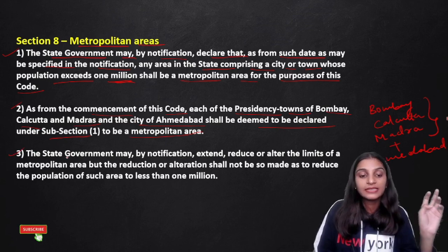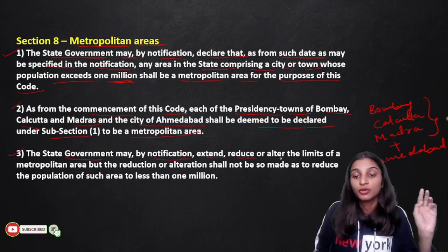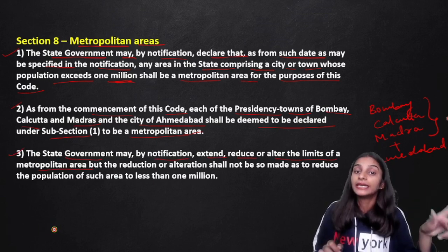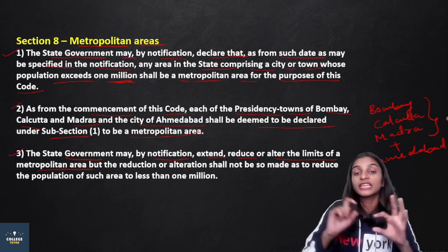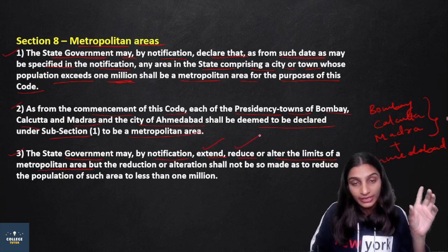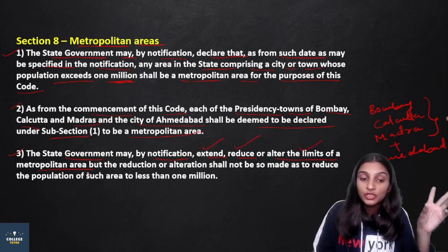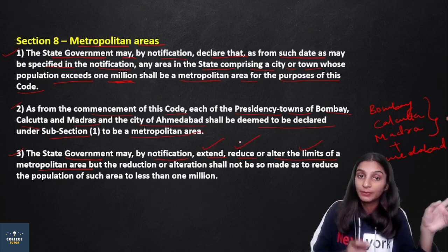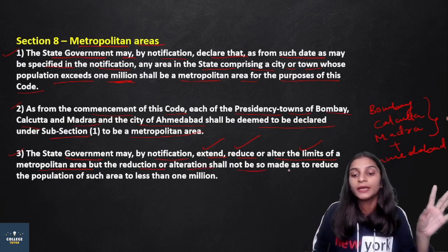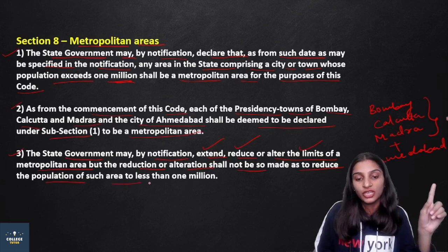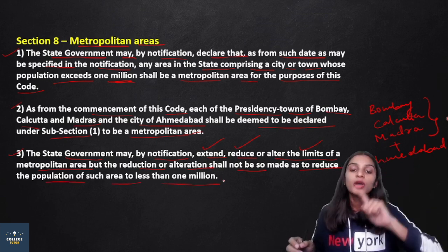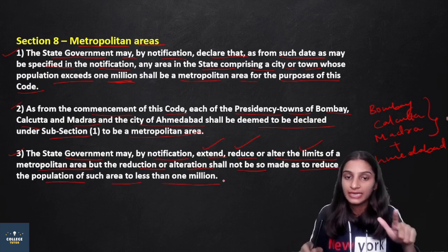Subsection 3: the state government may, by notification, extend, reduce, or alter the limits of any metropolitan area. However, such reduction or alteration shall not be made so as to reduce the population of that area to less than 1 million — the population cannot be allowed to fall below that threshold.